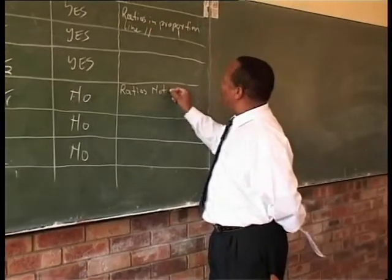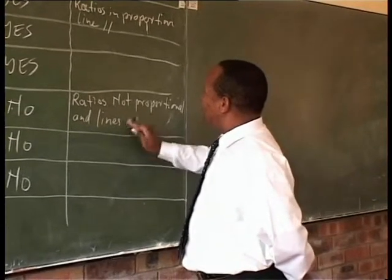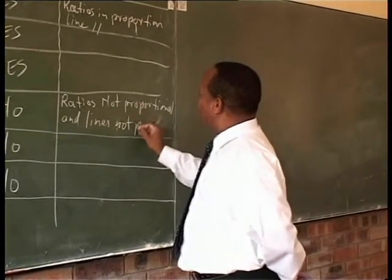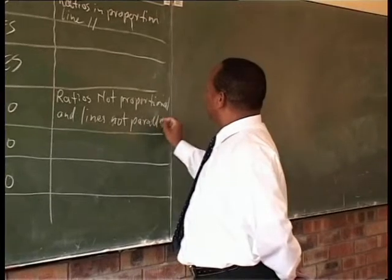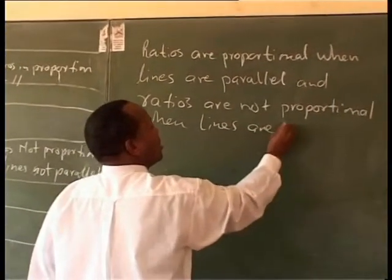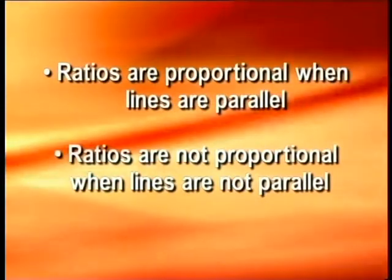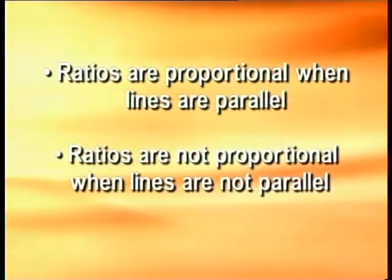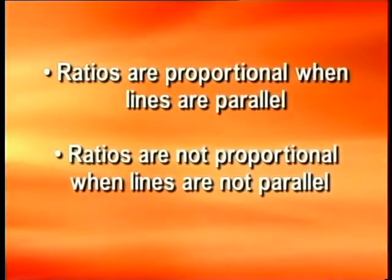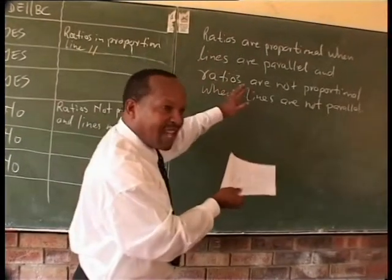The teacher and learners now use this information to develop a theorem. They name what is and isn't parallel, then draw conclusions: ratios are proportional when lines are parallel, and ratios are not proportional when lines are not parallel. The learner has come to the conclusion that proportionality of ratios depends on whether the lines are parallel.